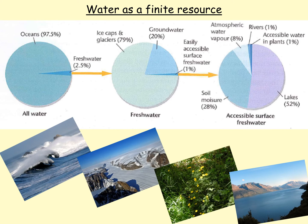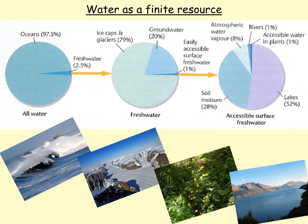Over half of that 1% comes in the form of lakes and rivers, which are the two sections of water we can really use on a regular basis. So that only makes up 53% of 1% of 2.5%. As you can imagine, water is an exceptionally finite resource — the amount actually available to us is minuscule. It is a finite resource and consequently it needs to be looked after. We also tend to pollute a lot of our water, further reducing the amount available to us.